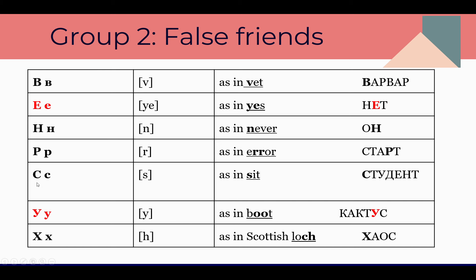The next is С — sounds 'S,' as in 'sit.' Most students struggle with this one. Let's read: С, Т, У, Д, Е, Н, Т — Студент. Student! Very good!